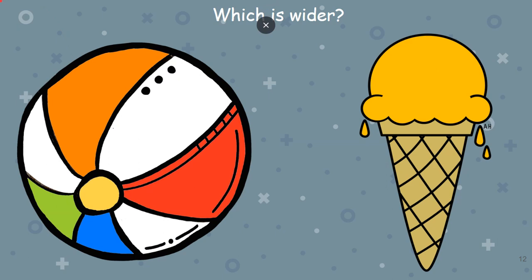Let's look at these two and say, which one is wider? Can you look at those and say, which one is wider? The beach ball or the ice cream? The beach ball is wider, isn't it? Because from side to side, it is wider. Now the ice cream cone is taller, but the beach ball is wider.